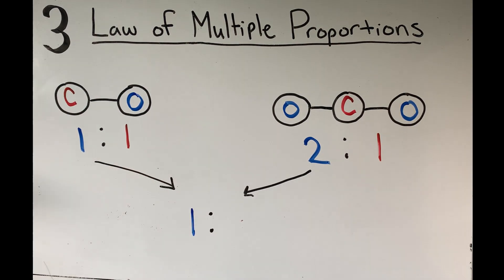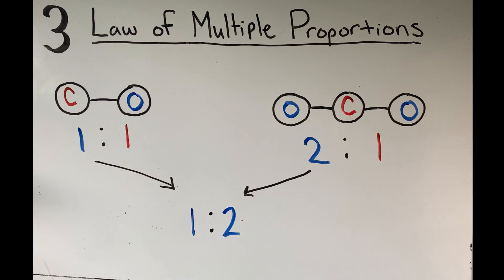The ratio in this case would be one to two, since there's one oxygen atom in carbon monoxide and two in carbon dioxide.